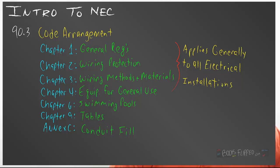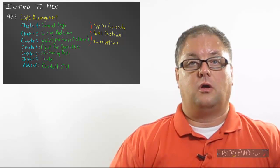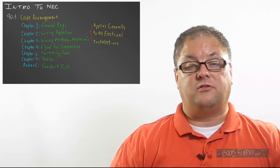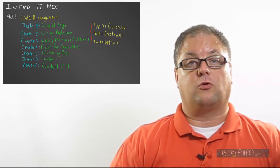Chapter three is wiring methods, and there's a lot of stuff in there — especially Table 310-15B-16. That is our go-to number one table that we're always looking at, and that's where you're going to hear me talk about the 60-degree, 75-degree, 90-degree table. Chapter four is equipment for general use — lights, motors, all kinds of things in that chapter for residential. All four of those chapters put together generally apply to all electrical installations, so no matter what kind of wiring you get into as an electrician, you're going to be going through chapters one through four quite a bit.